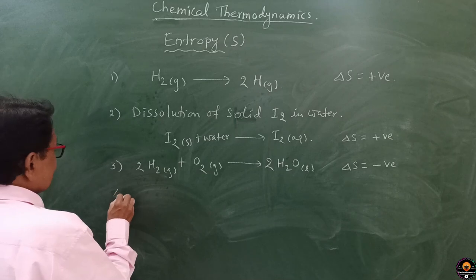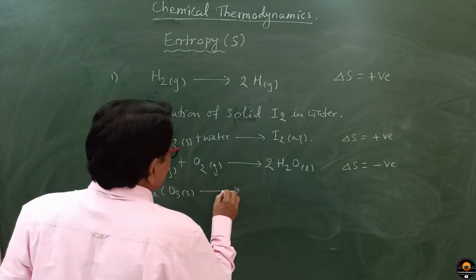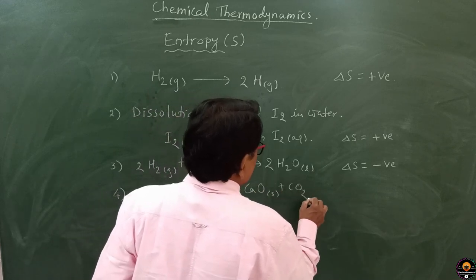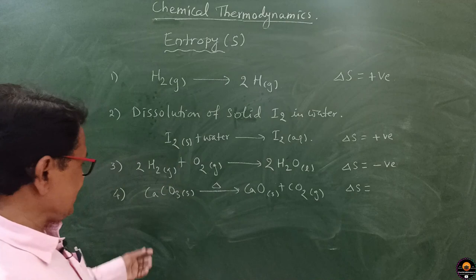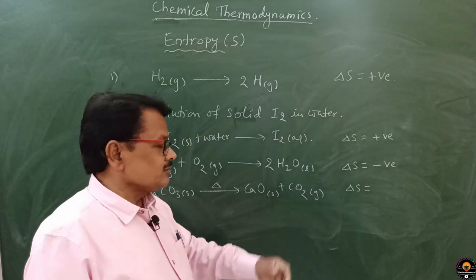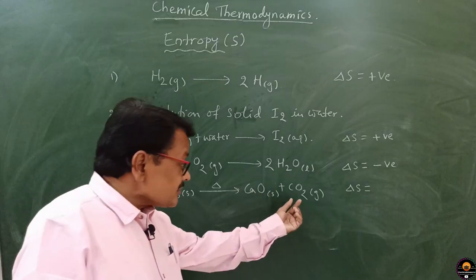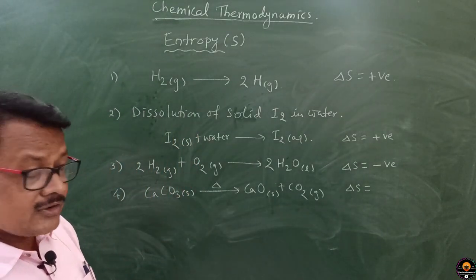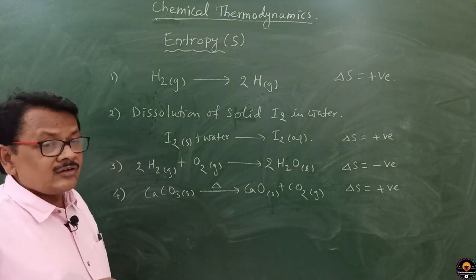One more example: CaCO₃(s) → CaO(s) + CO₂(g). When 1 mole of calcium carbonate in solid state decomposes, it forms 1 mole of calcium oxide in solid state and 1 mole of CO₂ in gas state. Toward the product side, 1 mole of gas state is additional, so the combined entropy of the products is more than the entropy of the reactants. Therefore, the change in entropy ΔS is positive.